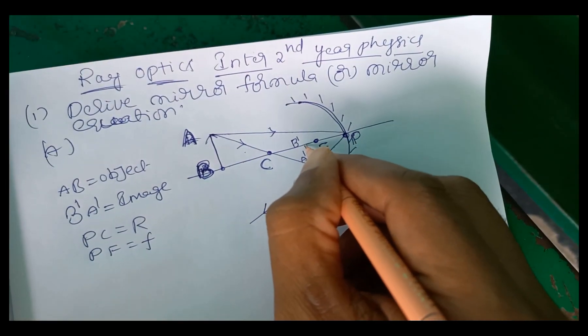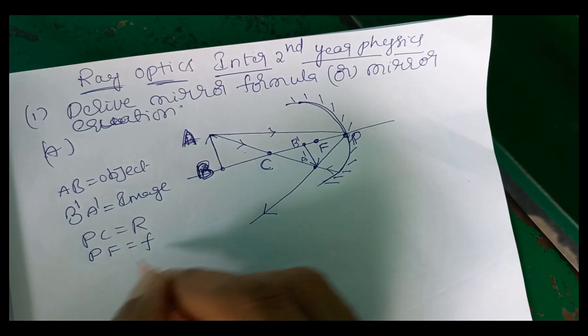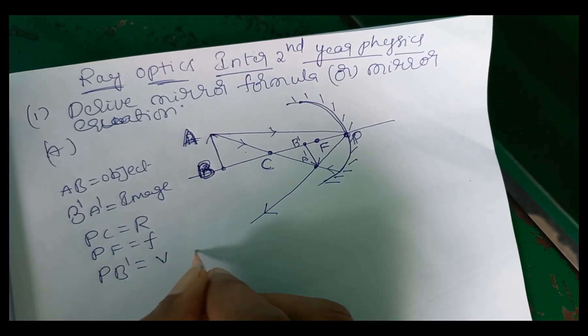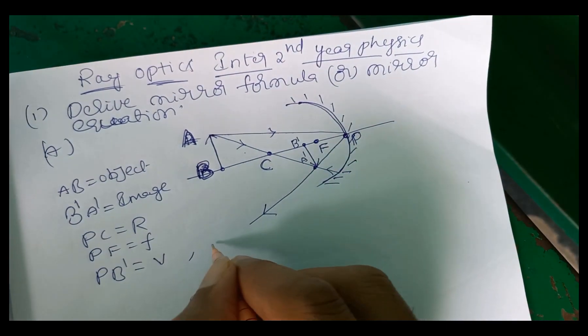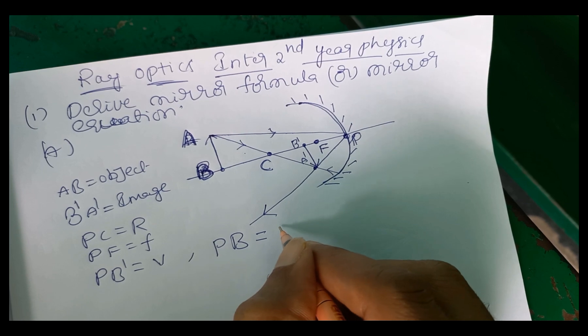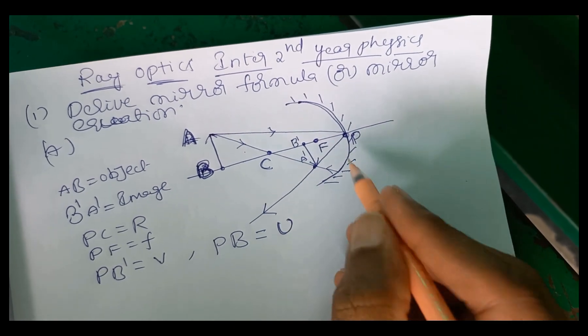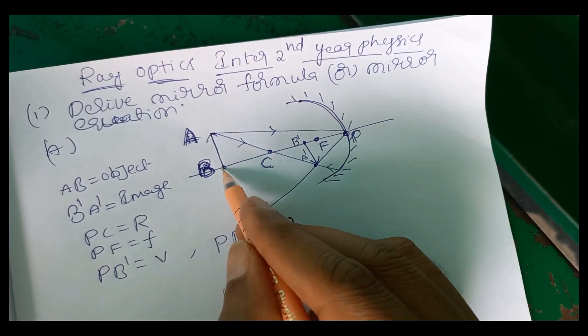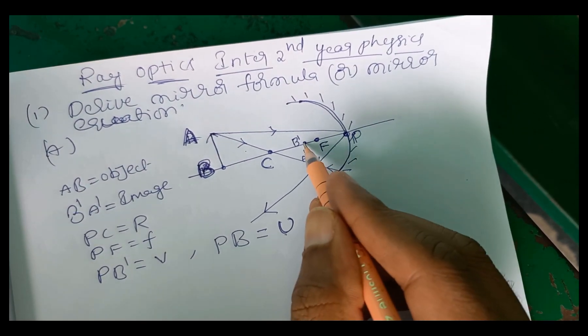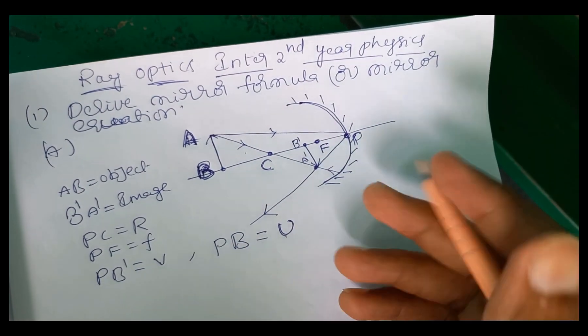PB dash is image distance denoted by V. PB is equals to object distance denoted by U. Distance from pole to object is called object distance denoted by U. Distance from pole to image is called image distance denoted by V.